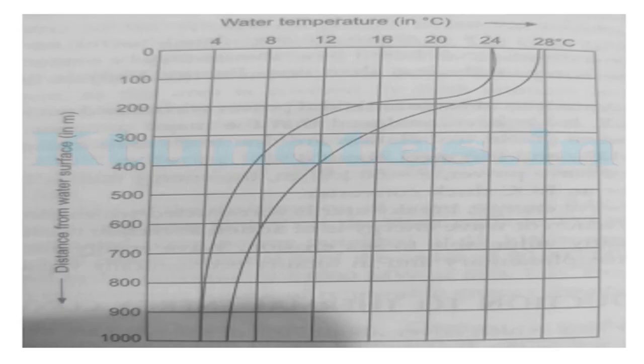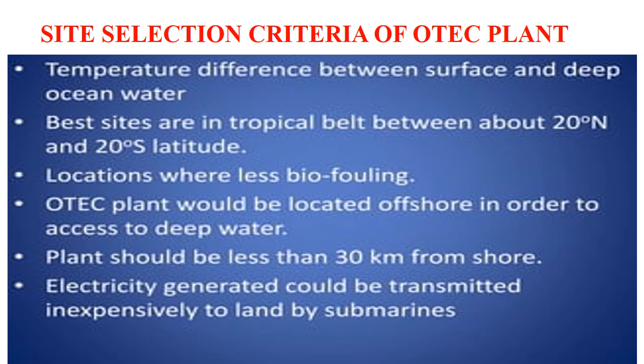This is a graphical representation of distance from the water surface and water temperature in degree Celsius. The site selection criteria of an OTEC power plant: the first is temperature difference between surface and deep ocean water. The second is that best sites are in a tropical belt between about 20 degrees north and 20 degrees south latitude. Third, locations with less biofouling. Fourth, the OTEC plant would be located offshore in order to access deep water, and should be less than 30 kilometers from the shore. Finally, electricity generated could be transmitted inexpensively to land by submarine cables.